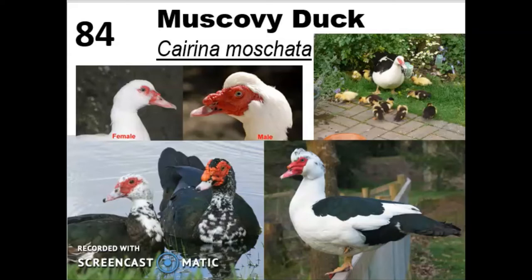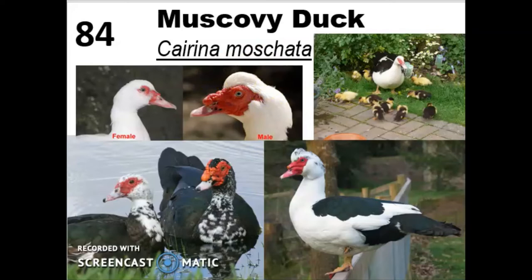On cattle farms, Muscovy ducks can reduce the number of flies by 80 to 90 percent. Their most common coloring is all white, but they also come in a pied color — a mixture of black and white patches — and several brown and gray shades. Males have a crest at the top of their heads, a section of feathers they can raise to assert dominance or impress females. They're excellent fliers so you have to clip their wings. They don't quack — males make a hissing sound and females make a pip sound similar to a flute alternating between F and G. Their eggs take 35 days to hatch — longer than any other duck — and their meat is 98 percent fat free.